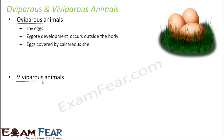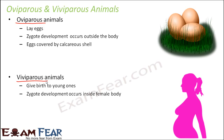Viviparous animals directly give birth to young ones — there is no egg laying. The zygote development occurs inside the female body. Human beings are the best example: a female carries the baby inside her body for nine months, during which the baby develops into a small human being. The entire zygote development takes place inside the body. The incubation period for human beings is normally nine months.